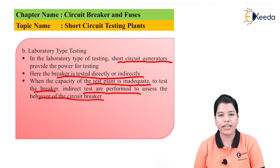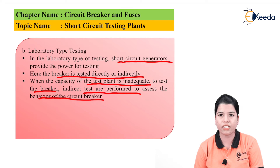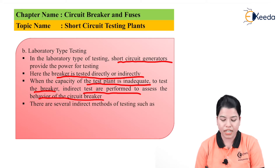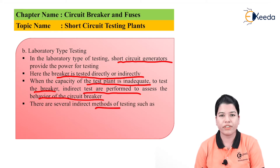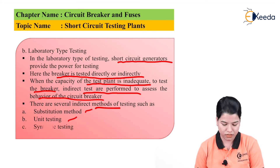In the direct test, the short circuit generator is directly connected to the circuit breaker to create short circuit conditions. If the voltage of the short circuit generator is not sufficient, then indirect testing can be done. There are several indirect methods: first is the substitution method, second is unit testing, and third is synthetic testing.